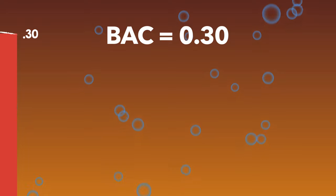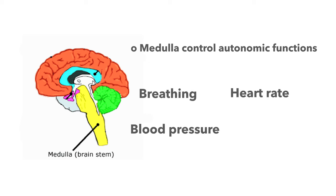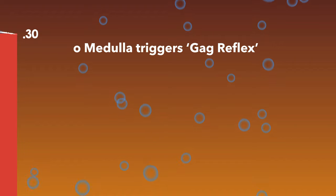At this point, the effects that alcohol is having on your medulla are a serious cause for concern. The medulla controls autonomic functions you normally don't need to think about: breathing, heart rate, blood pressure, and vomiting. Vomiting is a result of the stomach being irritated by the toxicity of the alcohol. The medulla is what triggers the gag reflex that allows you to clear vomit from your body.